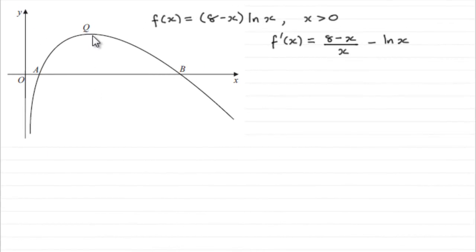Now at q, as I said earlier, we know now that the gradient f'(x) equals zero. So at q we can say that (8-x)/x minus the natural log of x equals zero.